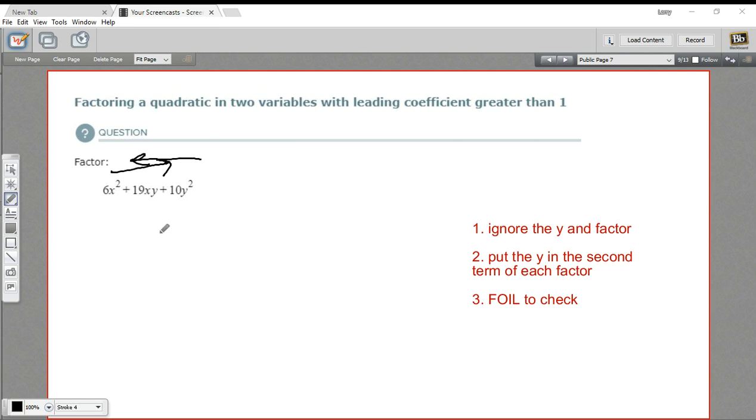The way to go about solving an equation that looks like this, I think the easiest way is just to ignore the y first. So let's rewrite this without the y terms at all. So 6x squared plus 19x plus 10. So ignoring the y's.